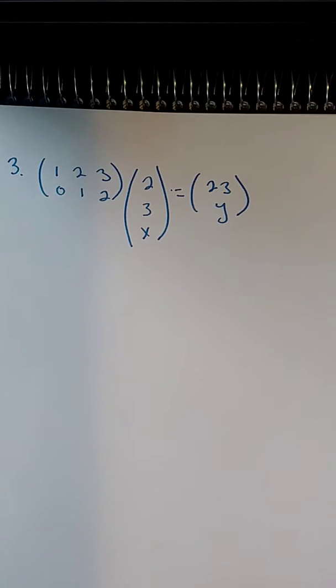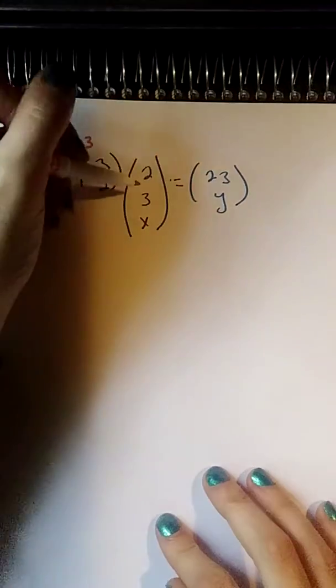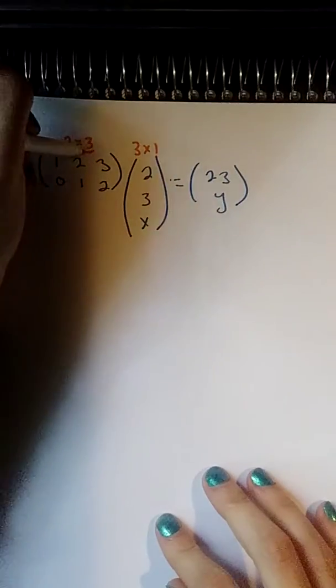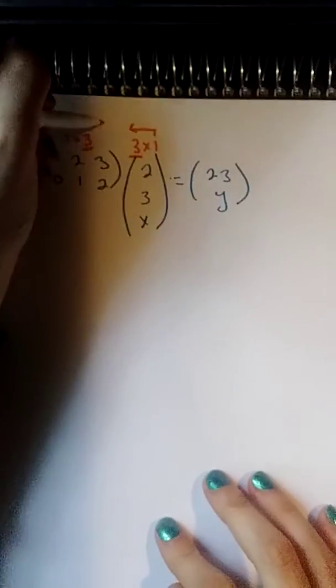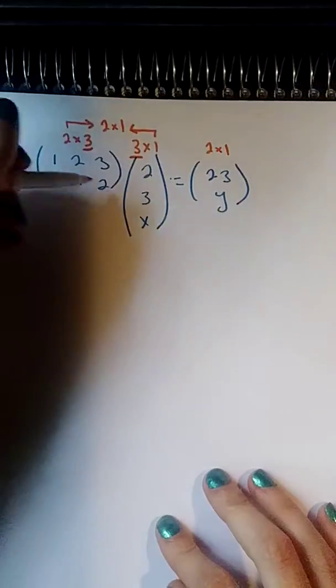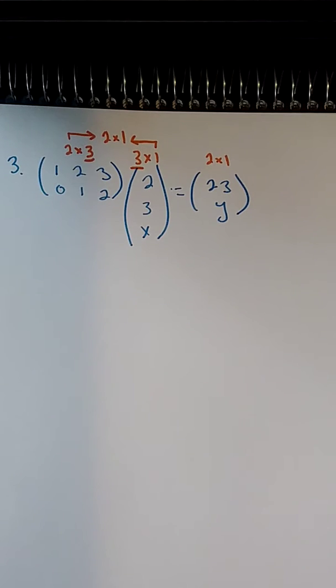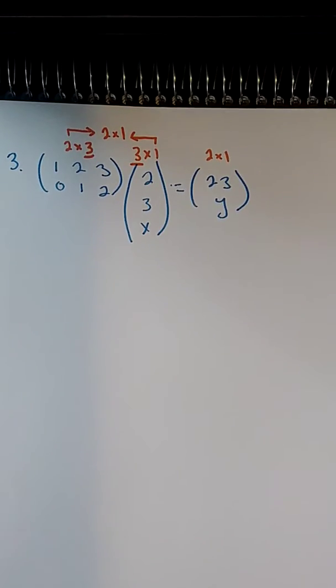So we're going to have to find our missing x and y here. Now, the matrix on the left here, this is a 2 by 3 matrix. This matrix is a 3 by 1 matrix. So our insides match, and the 2 and the 1 on the outside make our new matrix, which is exactly what we see here. This is a 2 by 1 matrix. So indeed, when we multiply these together, they will give us a 2 by 1 matrix. So the math here checks out.